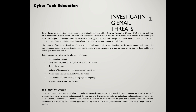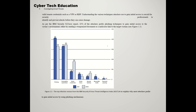Once an attacker has concluded reconnaissance against a targeted victim's environment and infrastructure and prepared the necessary weapons and equipment, the next step is to determine the preferred methods and techniques to gain initial access to the victim's network. Attackers have several techniques at their disposal to gain initial access, which basically includes phishing emails, exploiting public-facing applications, luring the user to visit compromised websites through drive-by compromise, stealing data, or using valid remote credentials such as VPN or RDP — Remote Desktop Protocols.